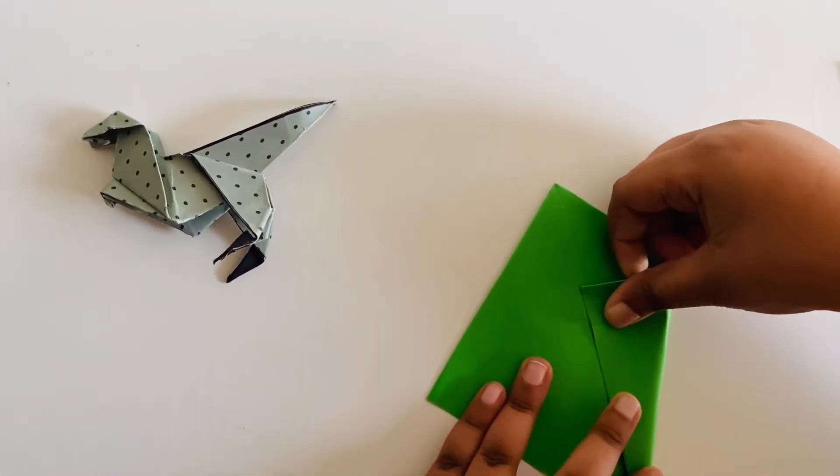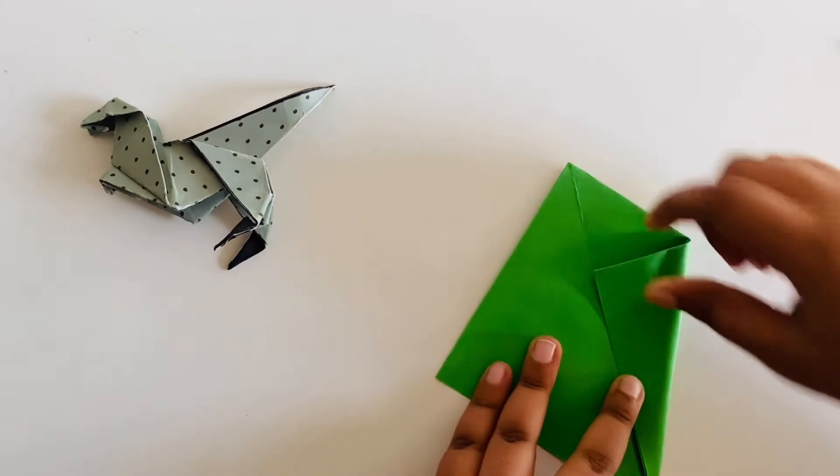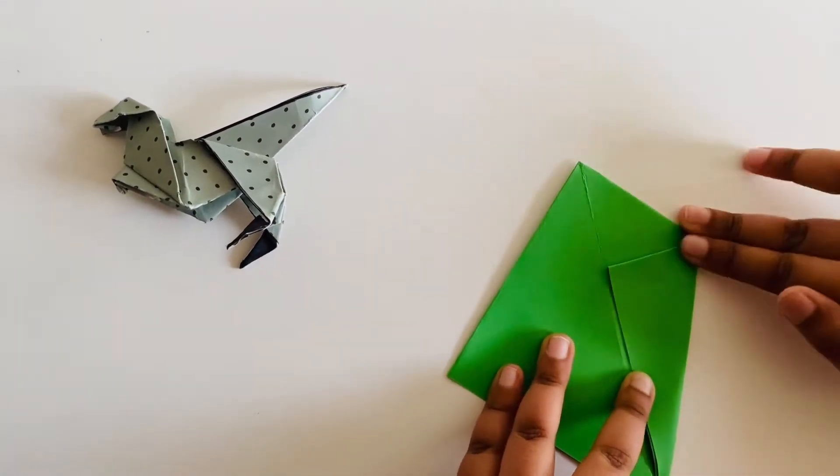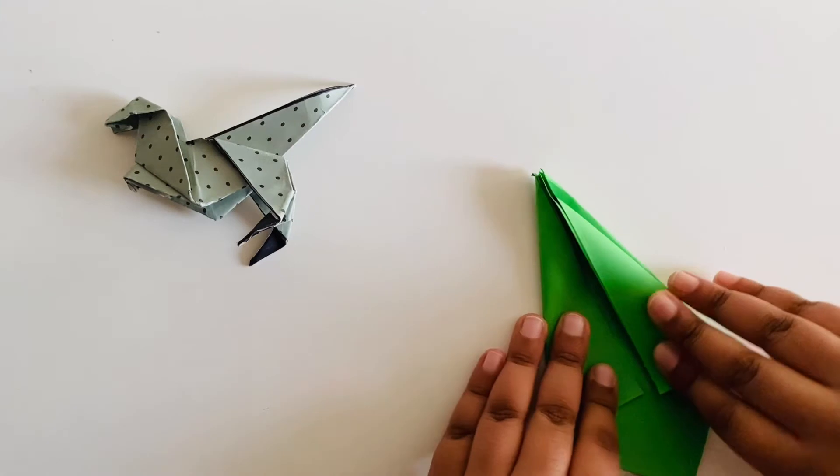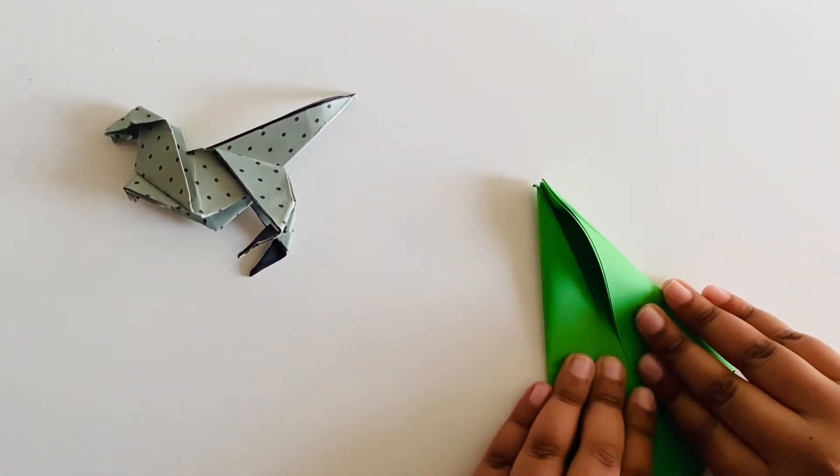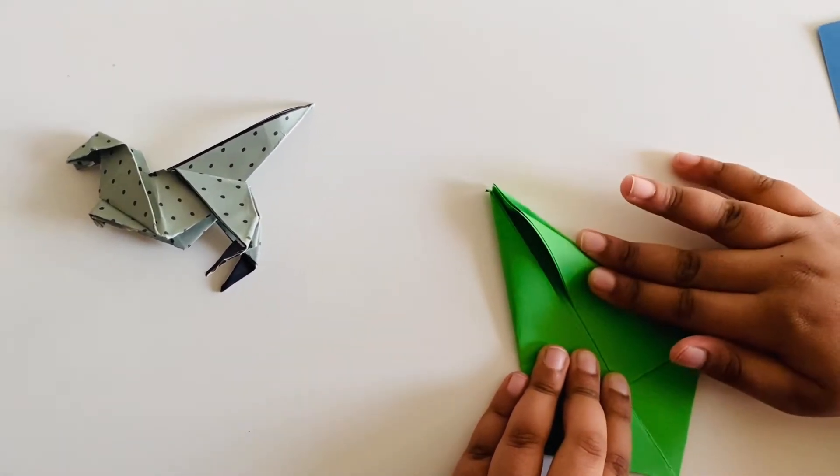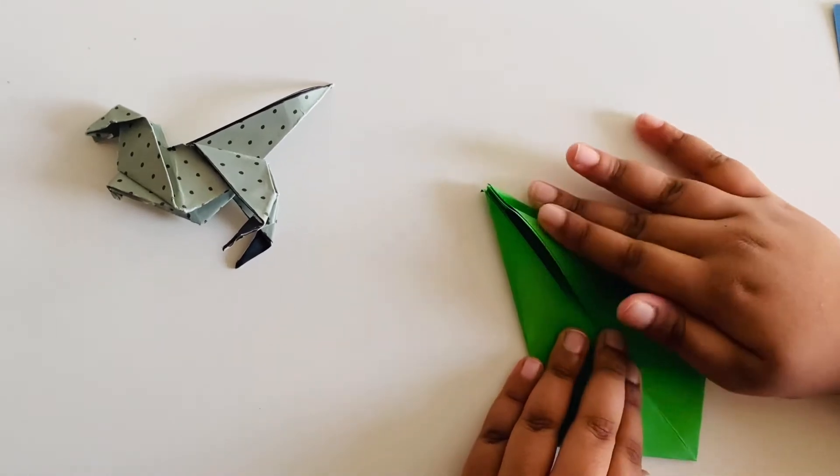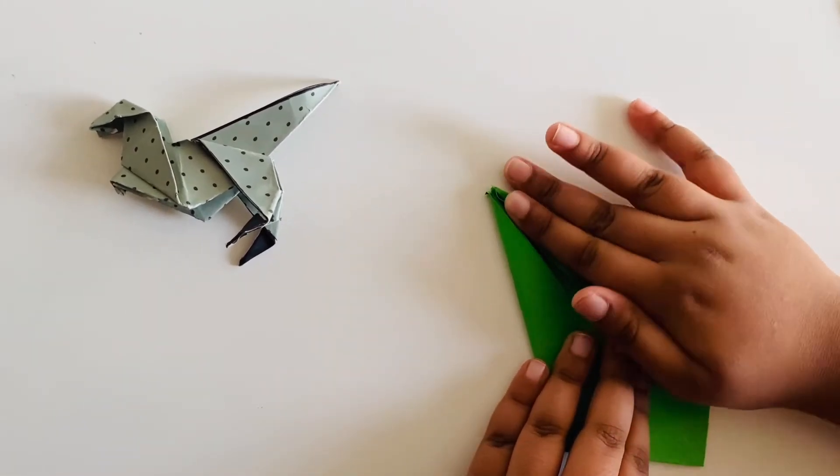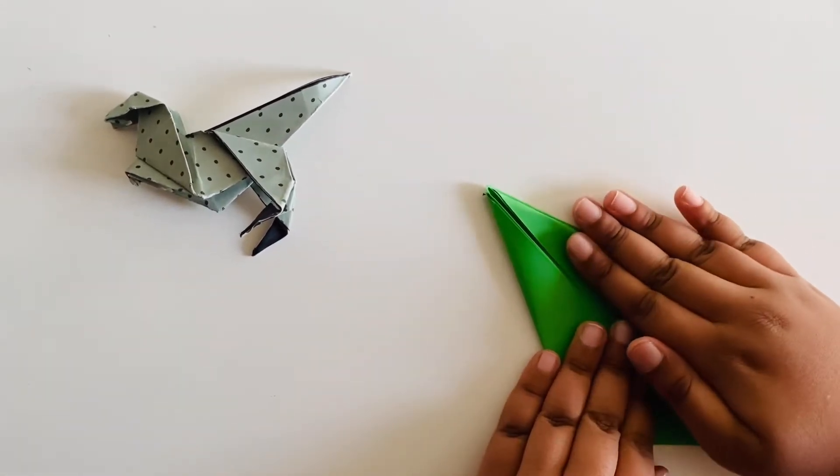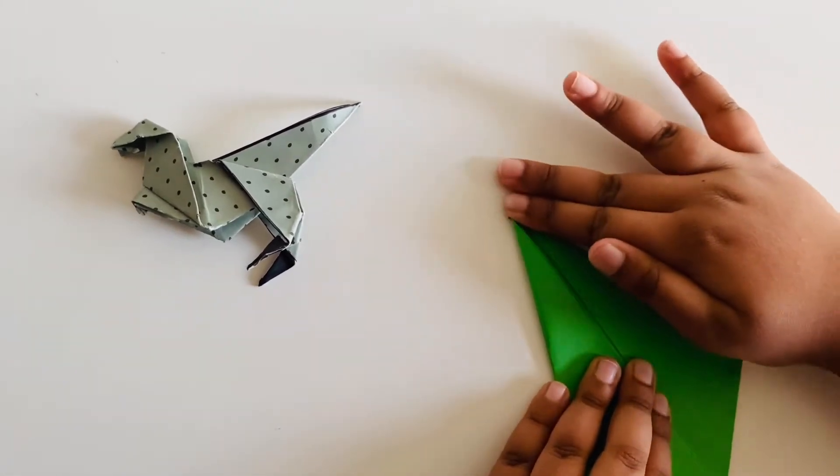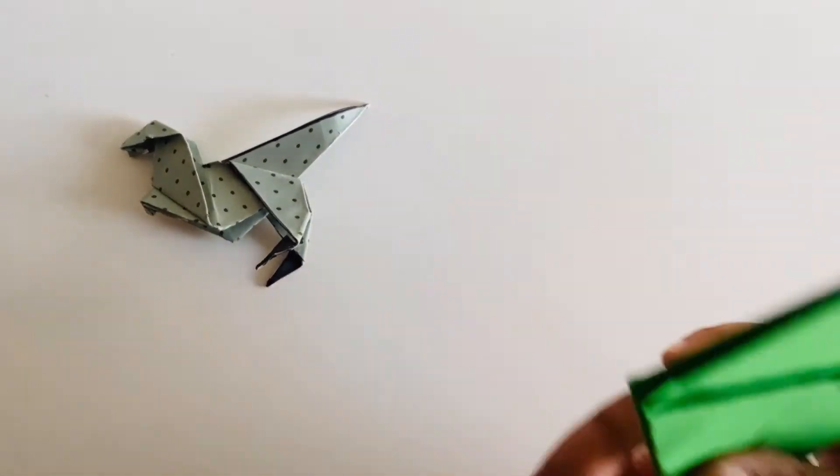Then do it like this on the other side. Then turn it like this. Then turn it like this. Then again turn it like this and it should look like a kite.